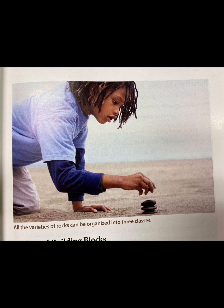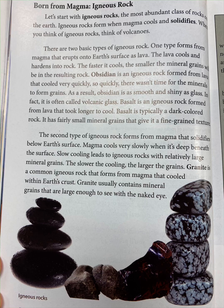All this variety might seem confusing, yet geologists organize all rocks into just three classes or basic types: igneous, sedimentary, and metamorphic. All the varieties of rocks can be organized into these three classes. Let's start with igneous rocks — the most abundant class of rocks on the earth.